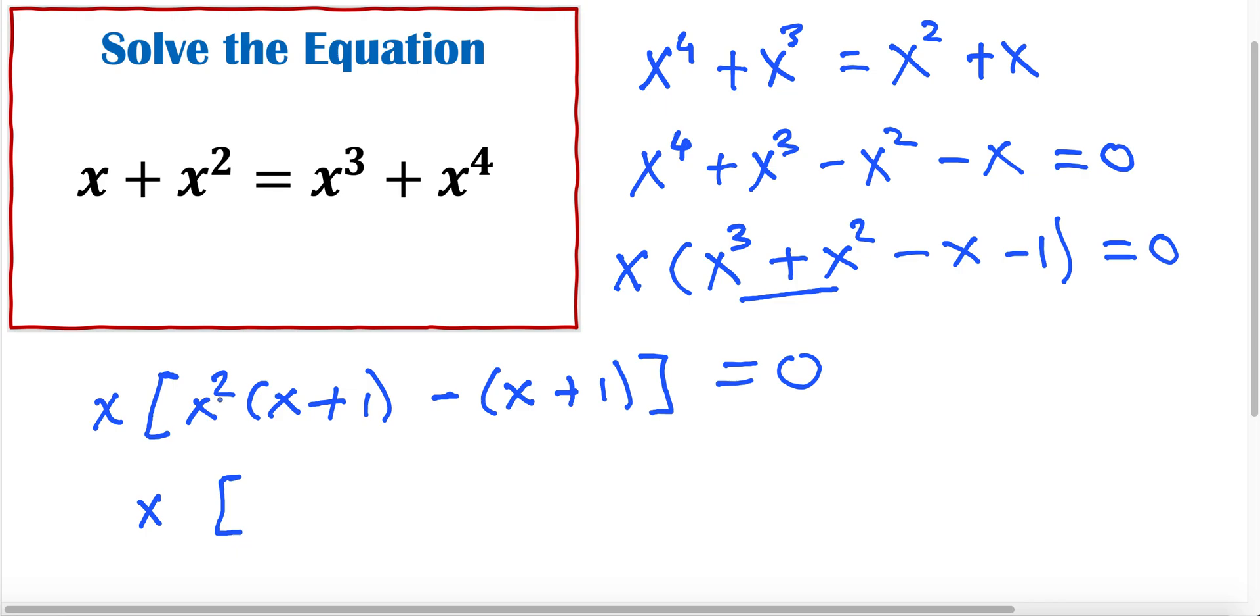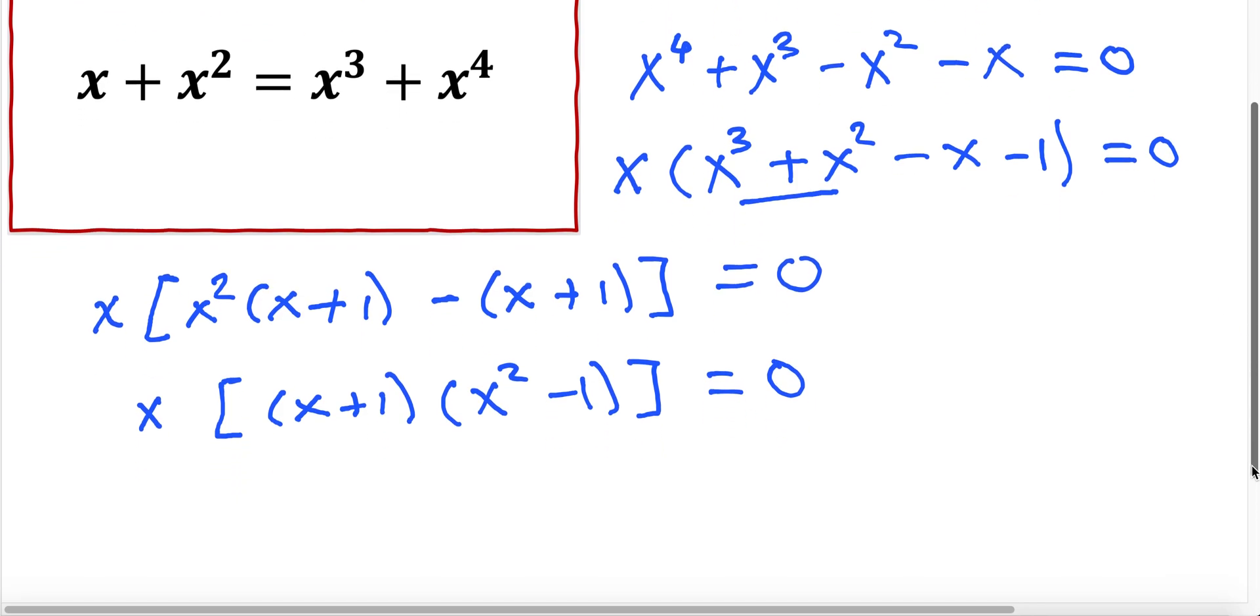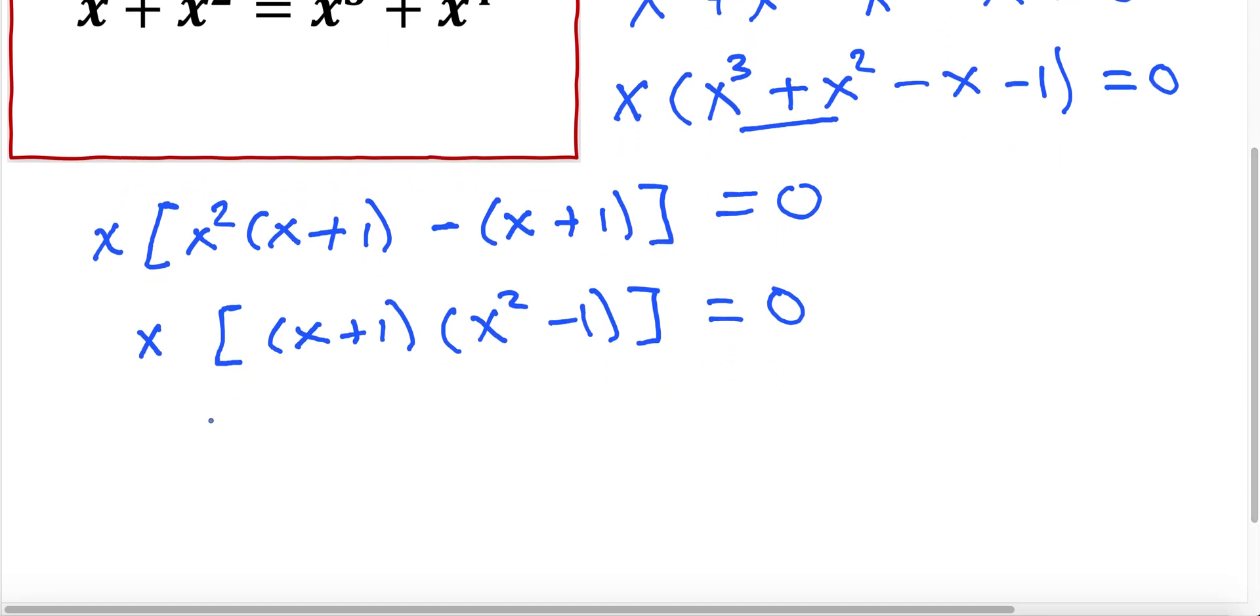Now we can write x and let me factor here inside what it is. So what we have here, x plus 1 is a factor for the two terms and we can write x plus 1. And what remains is x squared minus 1. In fact, what we have here is x times x plus 1 times x squared minus 1 equals 0.